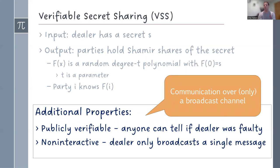Some additional properties that are useful if you're going to use them in the secure computation protocol are publicly verifiable. Everybody that sees the communication can tell if the dealer was faulty or not, and non-interactive. Non-interactive is just saying that the dealer can broadcast a single message and then go away. There is no back and forth.